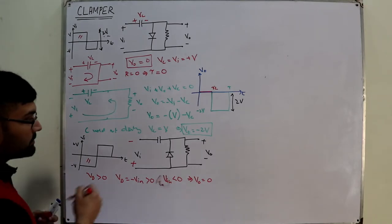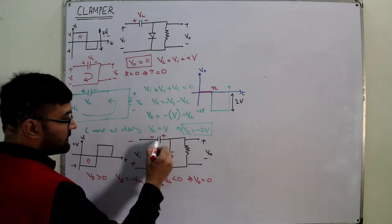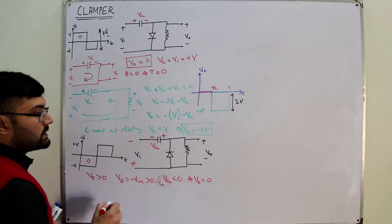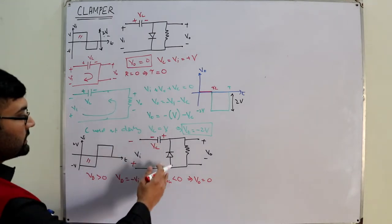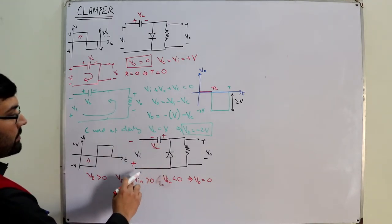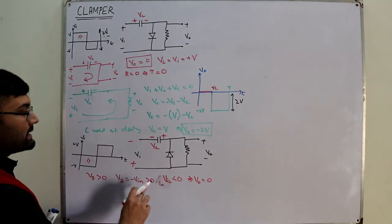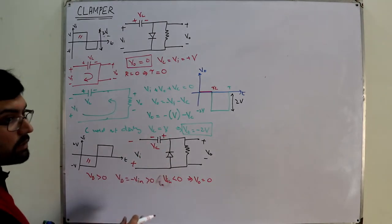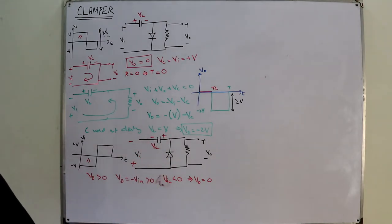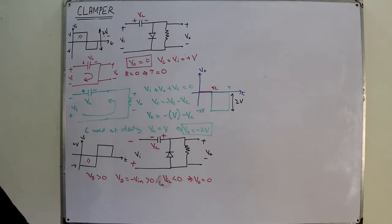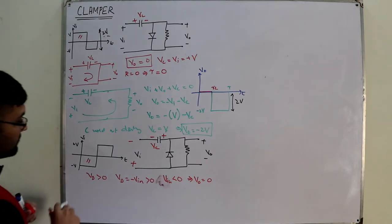This plate is connected here — negative — and this is connected here — positive VC. So what would be VC? The diode is shorted out. Positive to negative, negative to positive: VC is equal to V input, which is equal to V. So VC is equal to V.